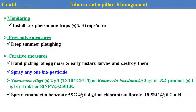For monitoring, install 2 to 3 pheromone traps per acre; for trapping, install 5 to 6 traps per acre. Preventive measures: deep summer plowing to destroy the pupal stage, hand picking and collection of egg masses and gregarious larvae, and destroying them. Spray any one pesticide — Memoria relay 3 to 2 gram per litre of water. Bacillus thuringiensis (Bt) product can also be used. NPV is very effective against this pest — SLNPV can be sprayed in the field for effective control. Chemical: emamectin benzoate or chlorantraniliprole is very effective to control this pest.